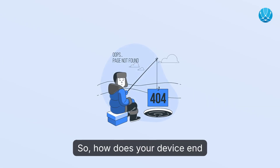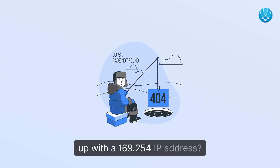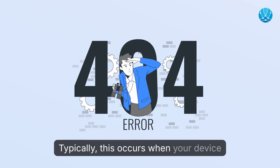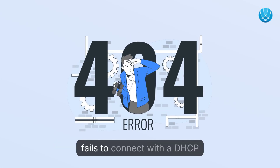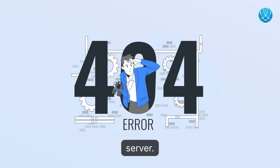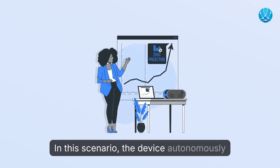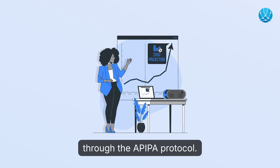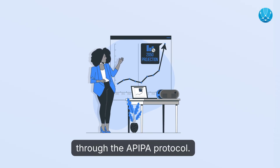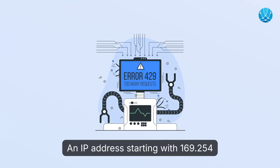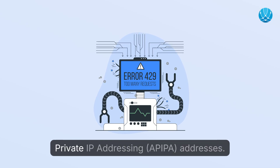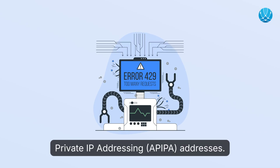So, how does your device end up with a 169.254 IP address? Typically, this occurs when your device fails to connect with a DHCP server. In this scenario, the device autonomously assigns itself a 169.254 IP address through the APIPA protocol. An IP address starting with 169.254 falls under the category of Automatic Private IP Addressing, or APIPA addresses.